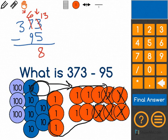1, 2, 3, 4, 5, 6. I can't take away 9. So I have to regroup one of these 100s and make it into many 10s.